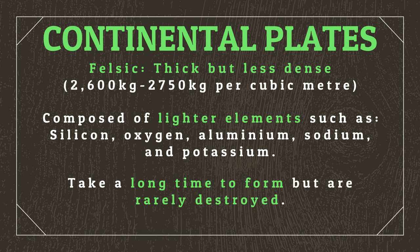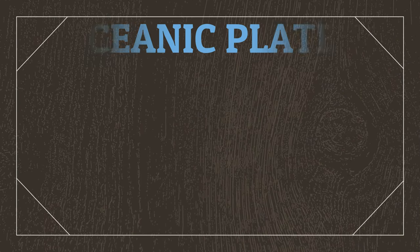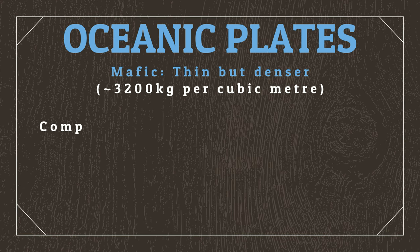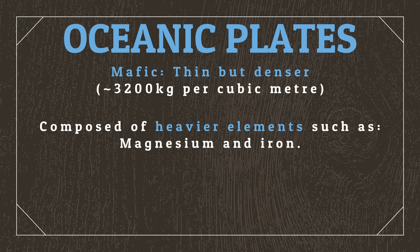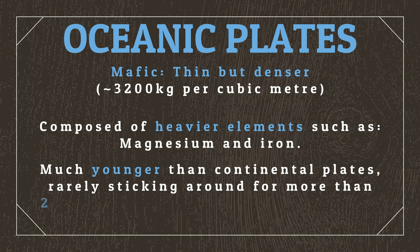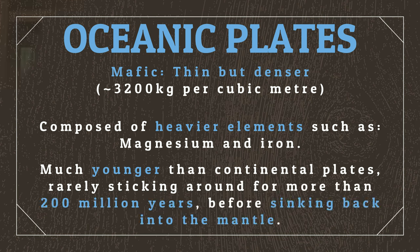Continental plates take a really long time to form, but are rarely destroyed, and some of the continental crust that forms in the early stages of the tectonic process will survive throughout the planet's entire history. Oceanic plates, in contrast, are mafic, meaning that they are thin but denser, composed of heavier elements like magnesium and iron. Due to their continued recycling as they sink back into the asthenosphere, oceanic plates are much younger than continental plates, rarely sticking around for more than 200 million years before sinking back into the mantle. We've already determined that there's more water on Locus than on Earth. So let's limit our continental plates to 5 out of the 30 plates we've got, making the planet around 85% covered in water, compared to Earth's 70%. Let's also put those 5 plates in groups, so that they can form larger continents.